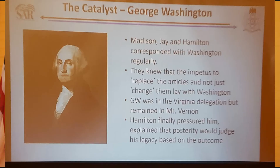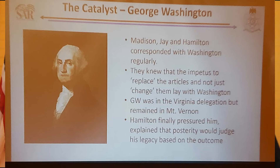Finally, Hamilton sent him a note saying: 'You need to get down here to Congress because posterity is watching what you do, and your legacy is going to be dependent on the outcome of this.' George Washington grabbed three slaves—one of them being Billy Lee—and headed to Philadelphia to sit in on the Congress. As soon as he got there, Robert Morris nominated George Washington to be president of Congress. Everybody agreed.